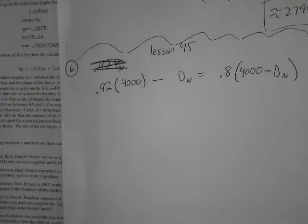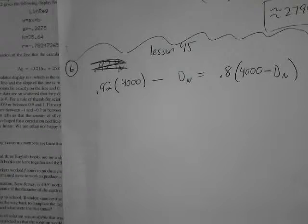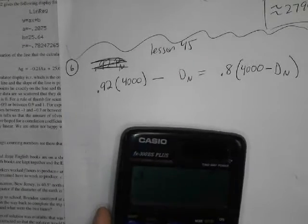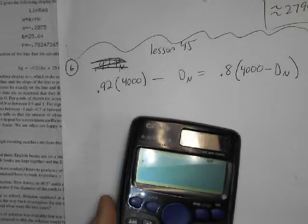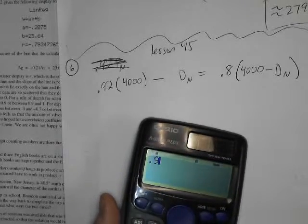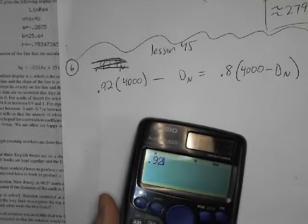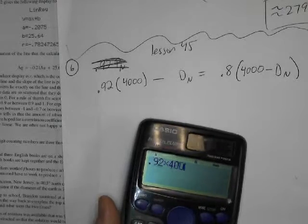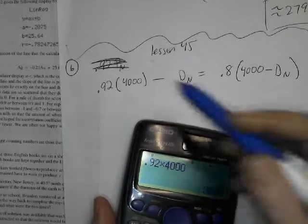And then just, you guys probably already calculated it out. Did it work? So, I'm just going to stick it all in my calculator. We'll see if it works. We'll know. .92 times 4,000.